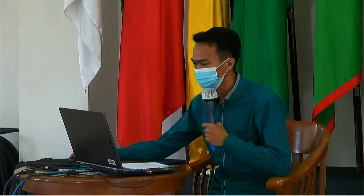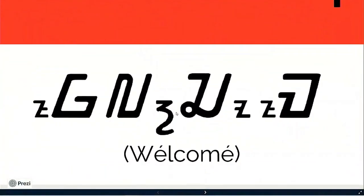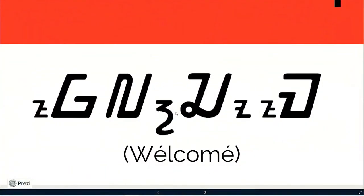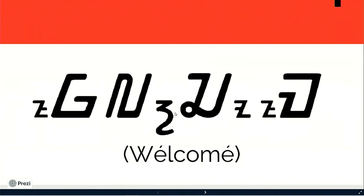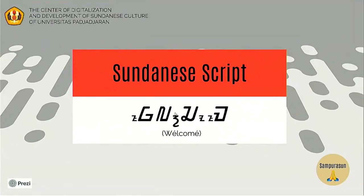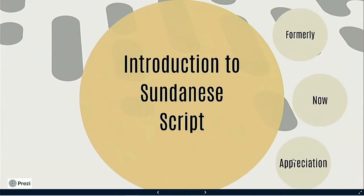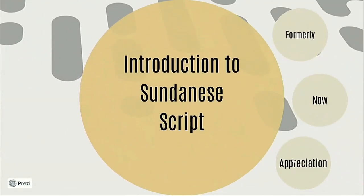According to data, Sundanese script has been used since the 14th to 18th century AD. This is an example of a word using Sundanese script. This script is used in the media of inscription and manuscript — for example, in the old Sundanese manuscript entitled Kawihimanandari.